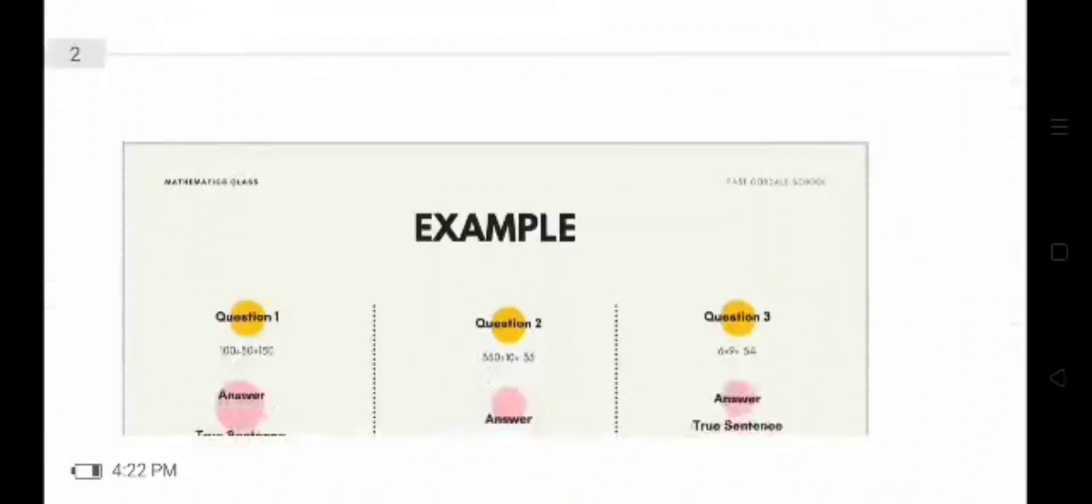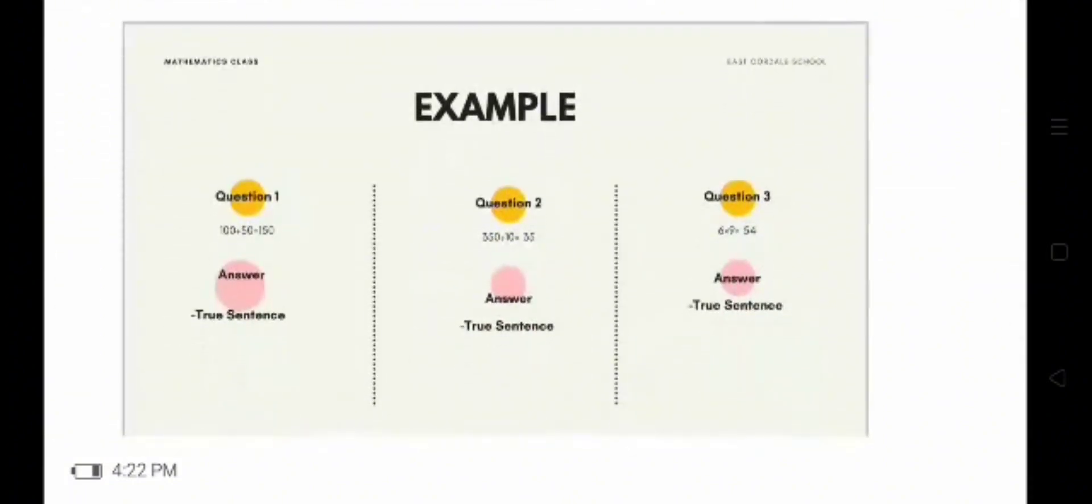For example, question number 1. 100 plus 50 equals 150. True sentence. How did it become a true sentence? Because when we add 100 plus 50, the result is 150. That's why it becomes a true sentence. Question number 2. 350 divided 10 equals 35. True sentence also. Because 350 divided 10 equals 35. The answer is correct. If we divide 350 by 10, the result is 35.